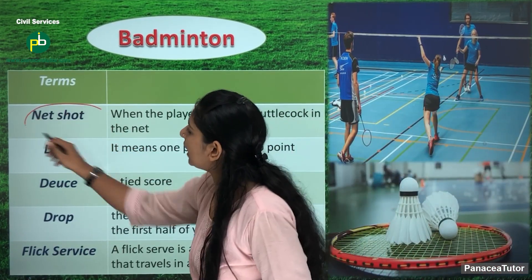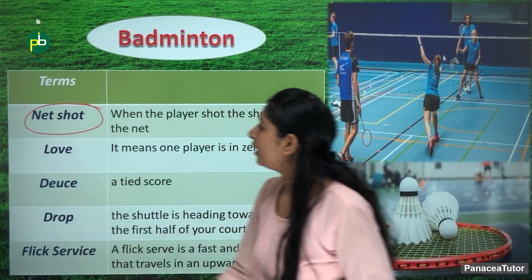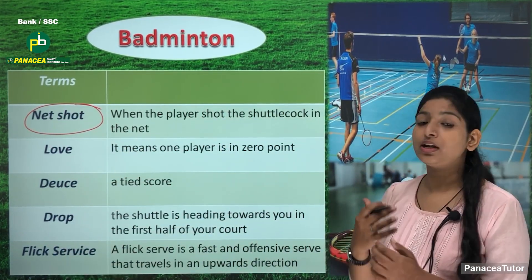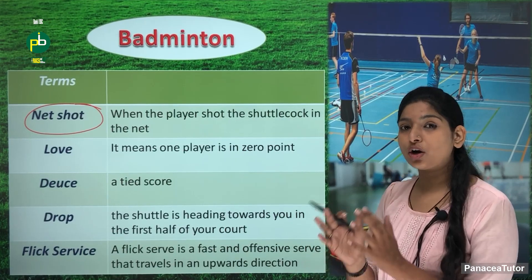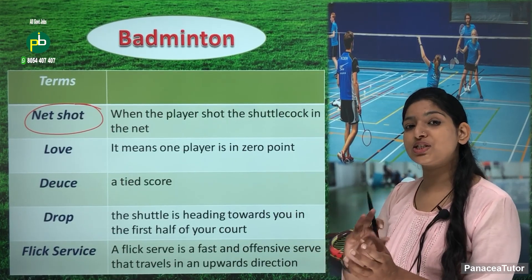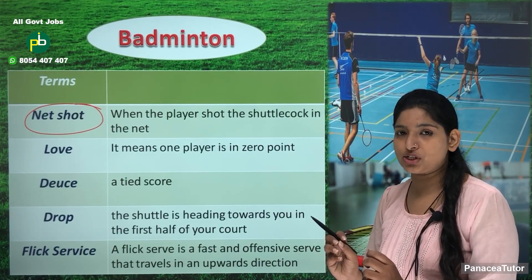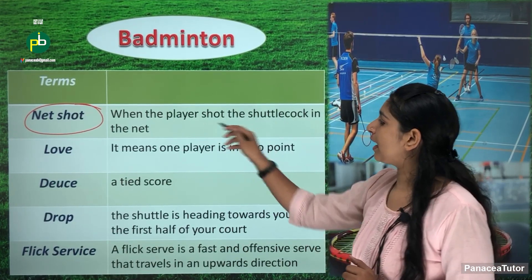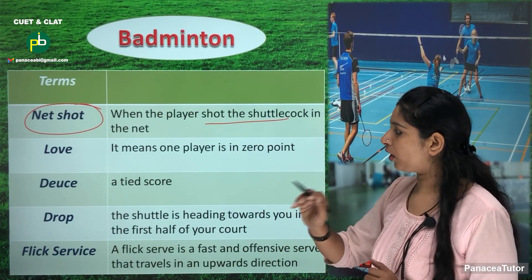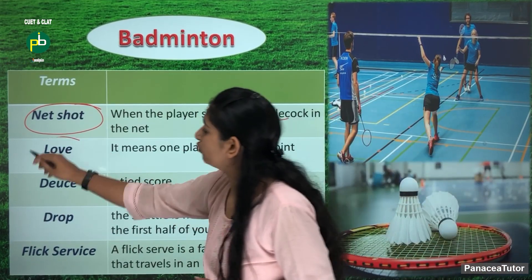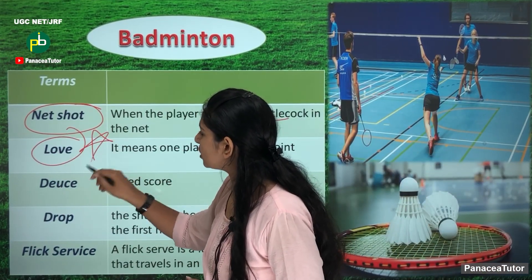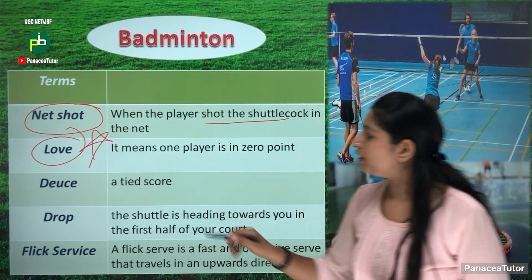One important thing is net shot. What is net shot? When a player makes a shot and the shuttlecock just passes over or near the net, that is known as net shot. Next is love — a very important term used in badminton.